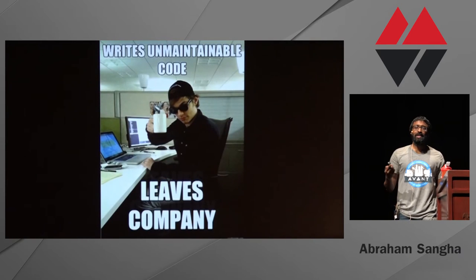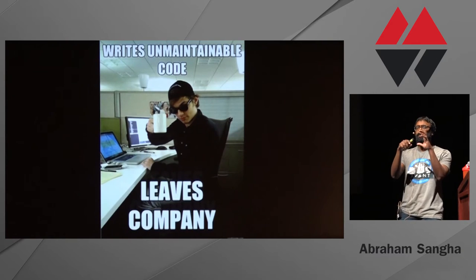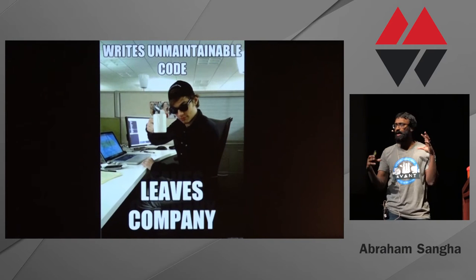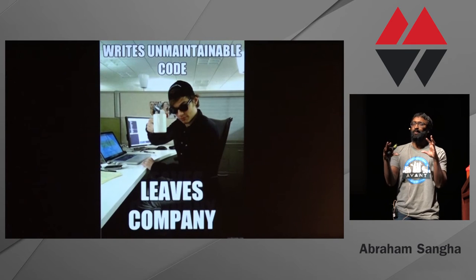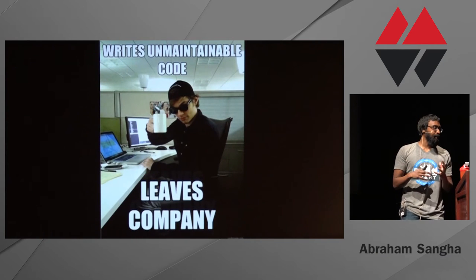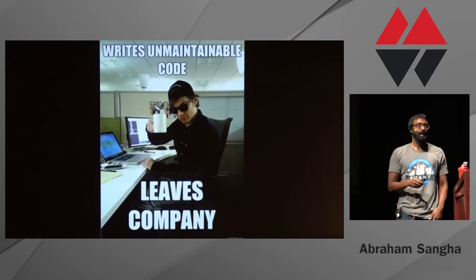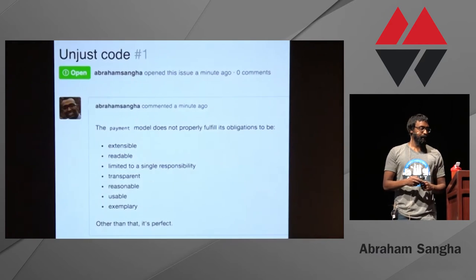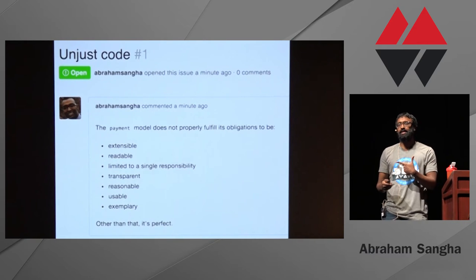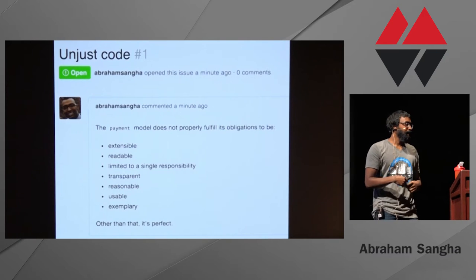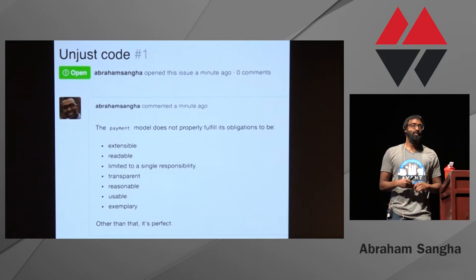When we think about justice in terms of software development — we all have varying concepts of justice, of what our obligations are. But hopefully in this room, our diverse conceptions of justice can all meet in this situation: someone writes unmaintainable code and just leaves the company. There's an obligation that has been unfulfilled. You ever see this as an issue? I want to start a trend of people opening up issues that say: there's a problem with this code — it's unjust.